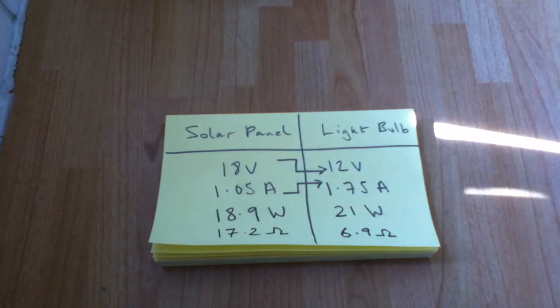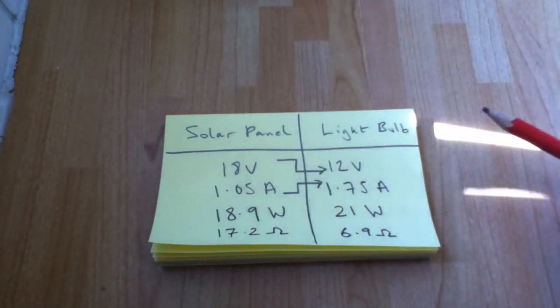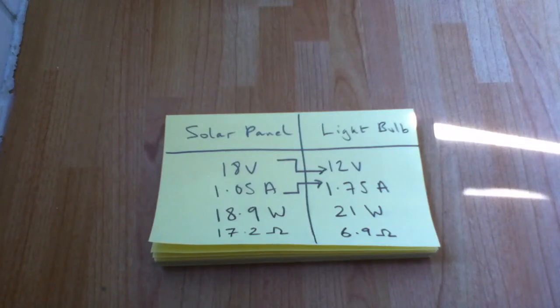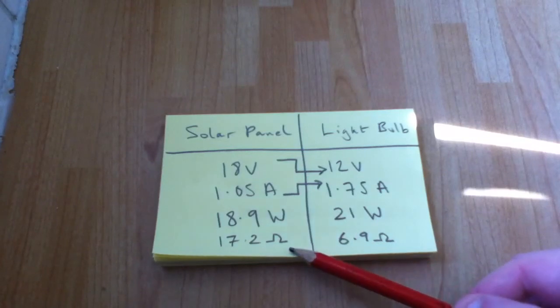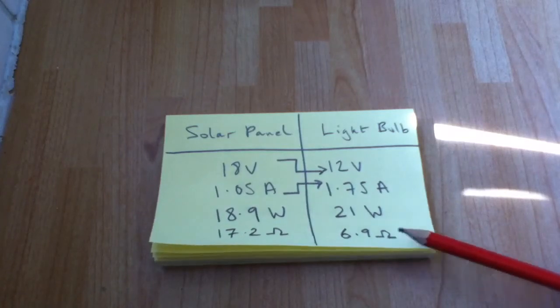Now, I've added something else to this list, and that is resistance values. Because we've got fixed voltage and current values for both the solar panel and the light bulb, we can actually calculate the resistances of these two devices. And this is where you can see the large mismatch between them. For the solar panel, I've calculated 17.2 ohms. And for the light bulb, 6.9 ohms.